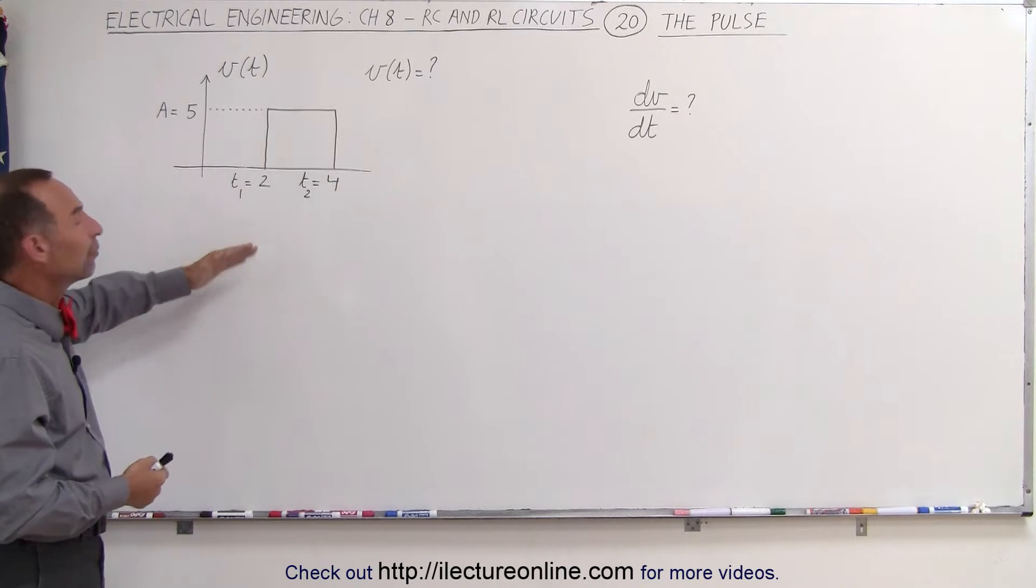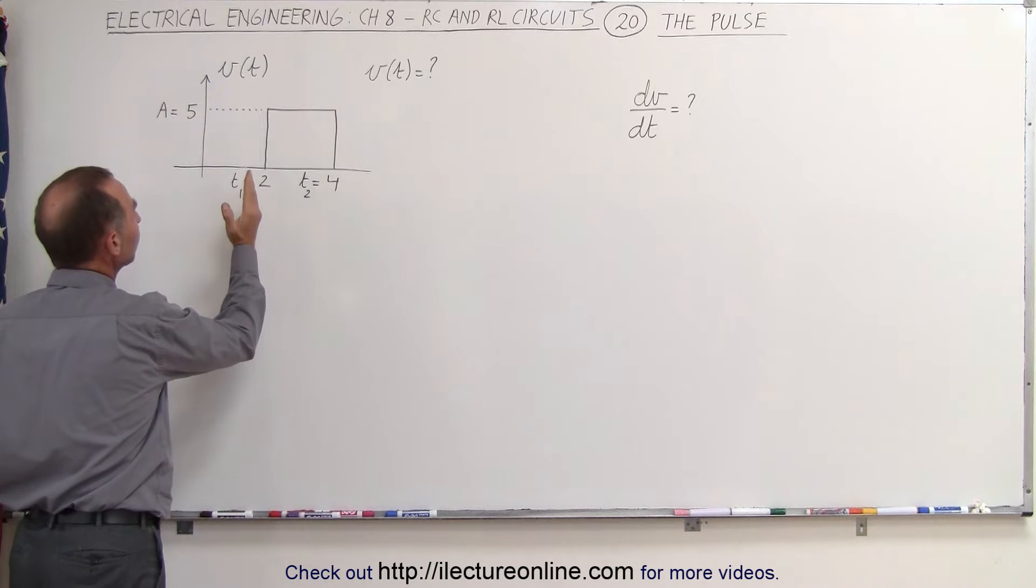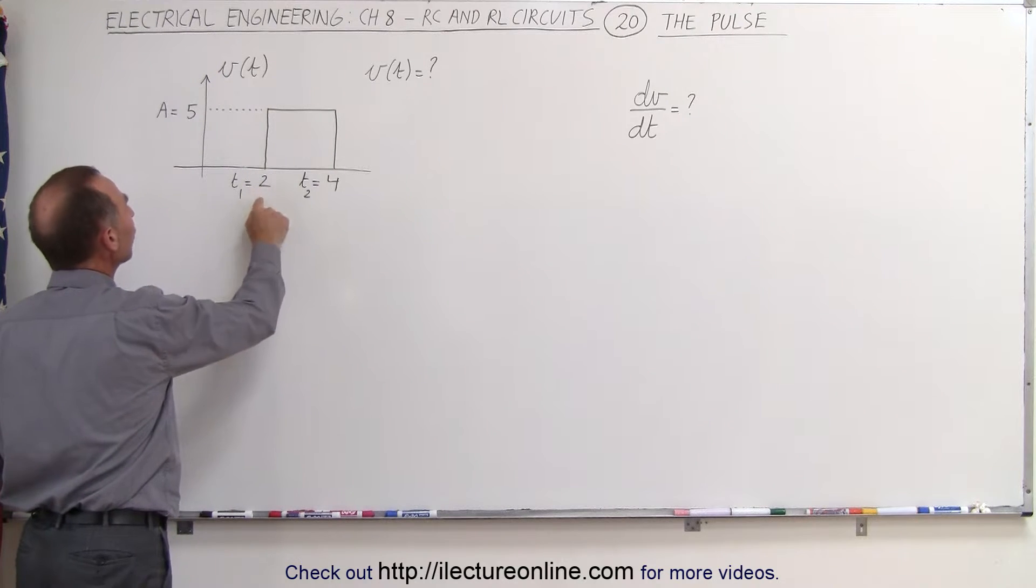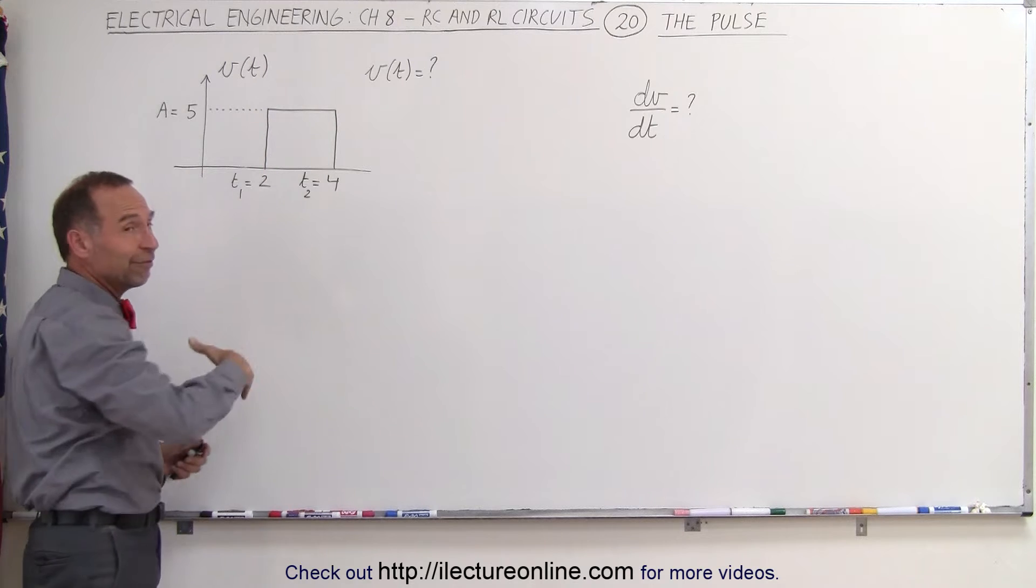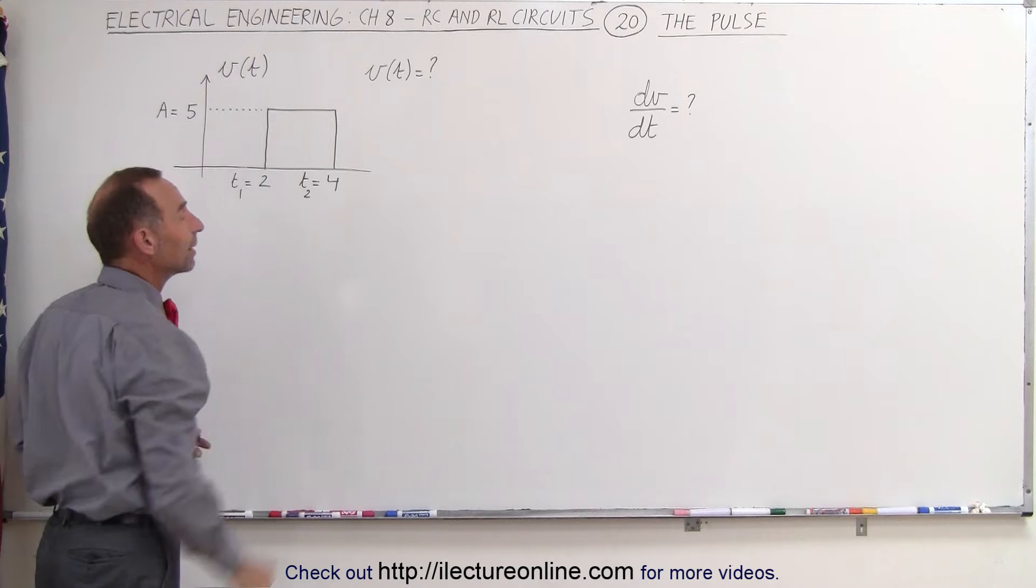So here we have a graphical example of what that might look like. The input is zero until it reaches a certain amount of time, let's say time equals two, and then it goes to an amplitude of five, could be five volts, and remains there for the next two seconds and then goes back down to zero.